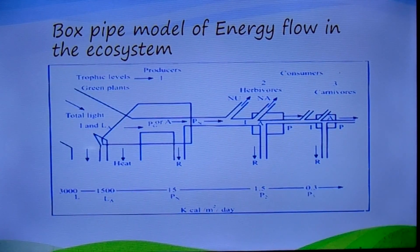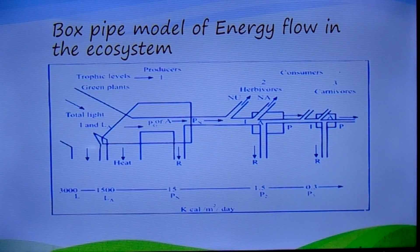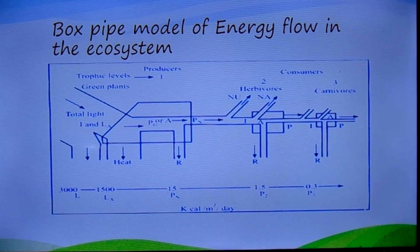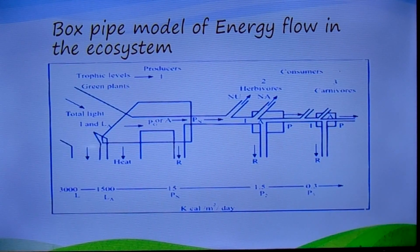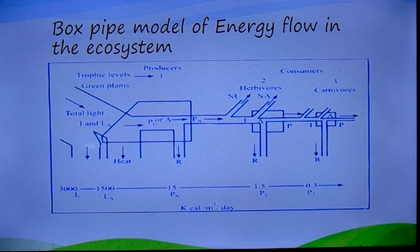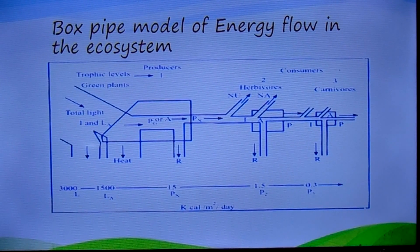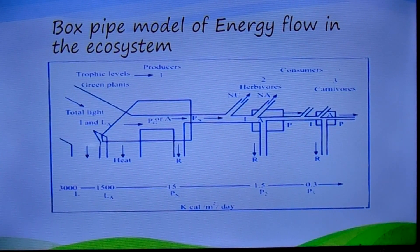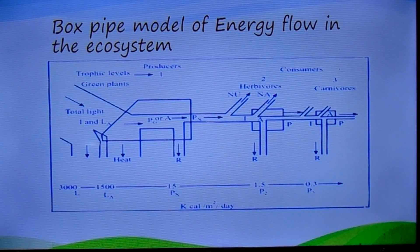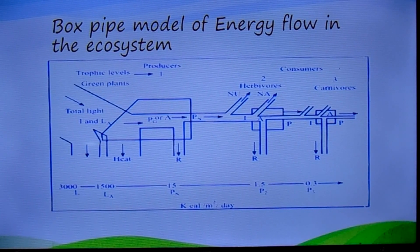In this figure, boxes represent the trophic levels and the pipes depict the energy flow in and out of each level. Energy inflows balance outflows as required by the first law of thermodynamics, and energy transfer is accompanied by dispersion of energy into unavailable heat as required by the second law. It becomes evident that energy flow is greatly reduced at each successive trophic level, from producers to herbivores and then to carnivores.